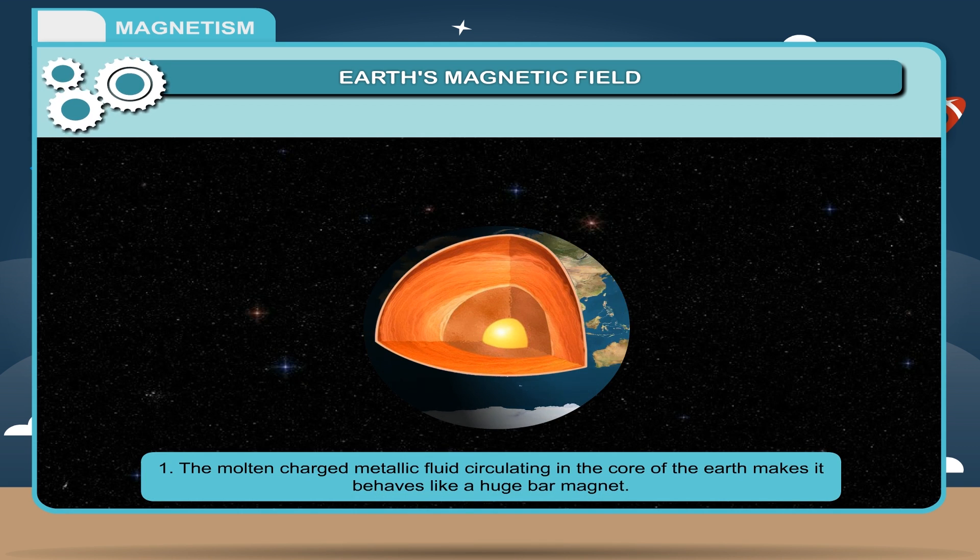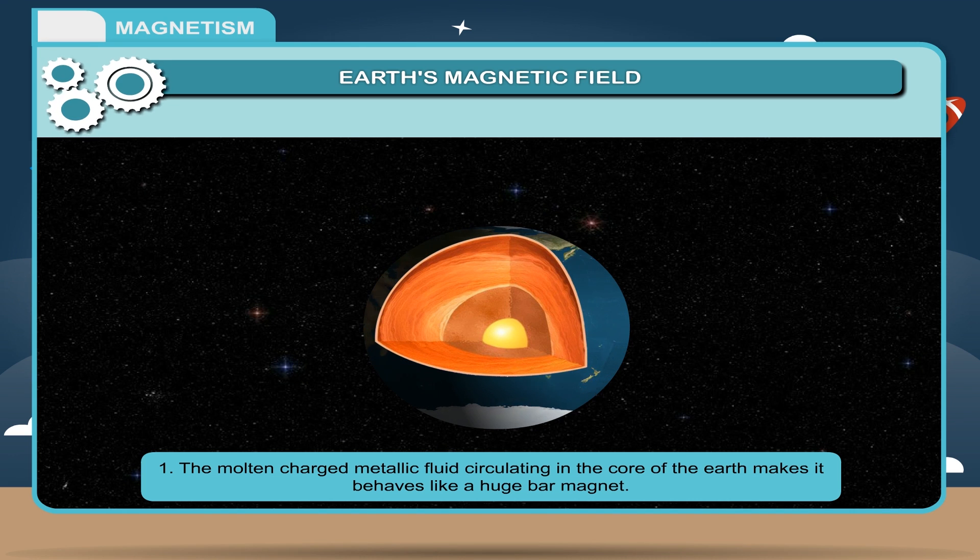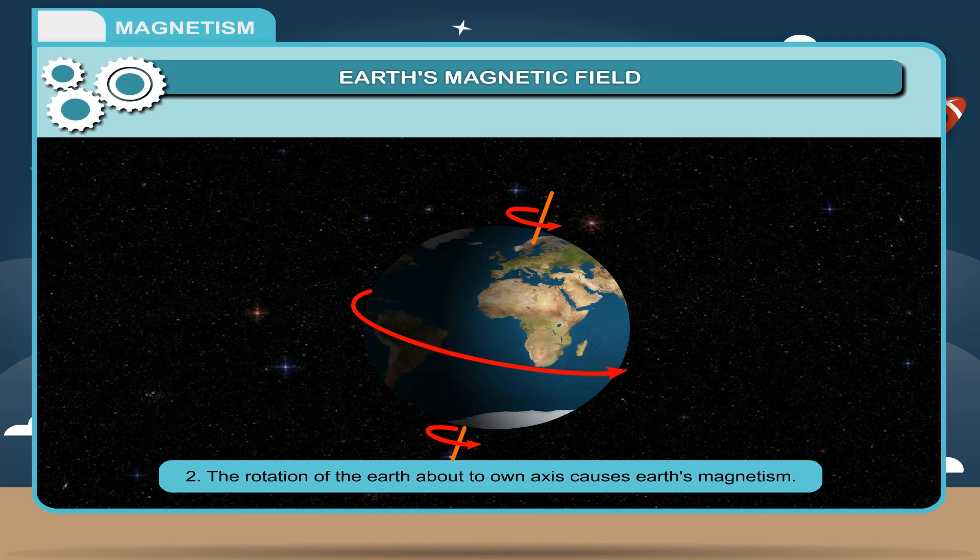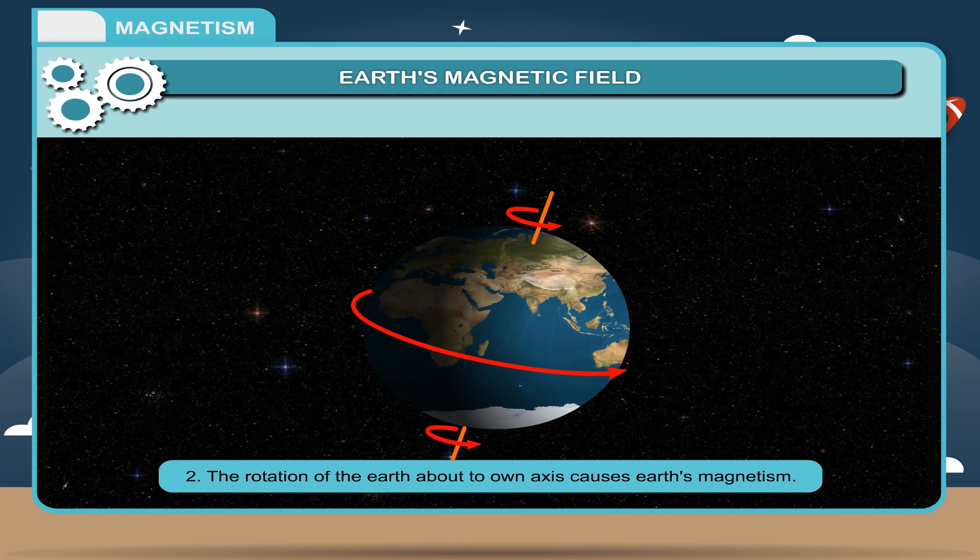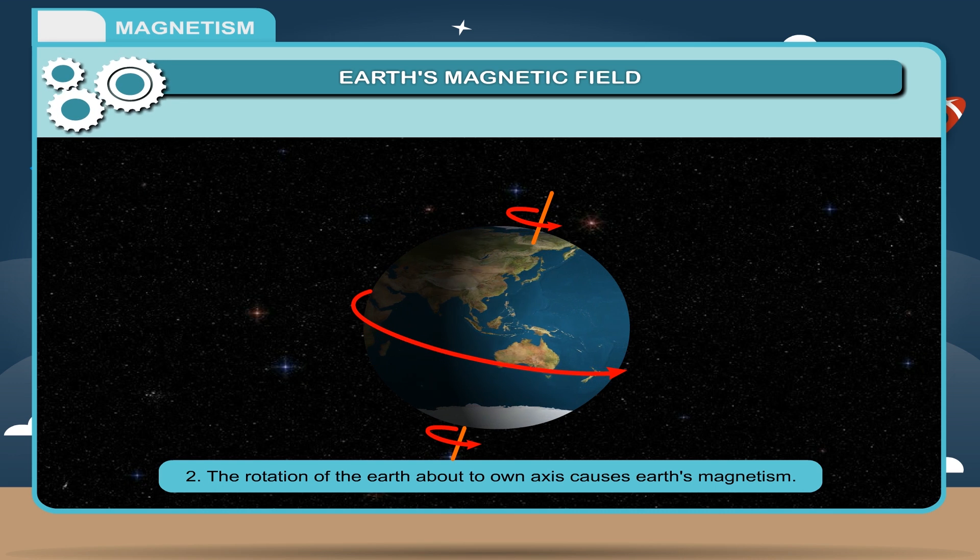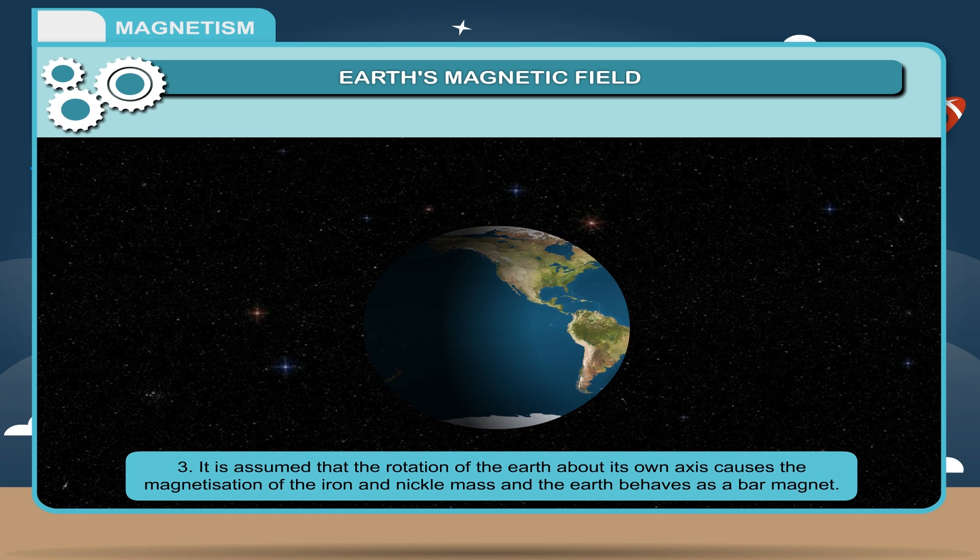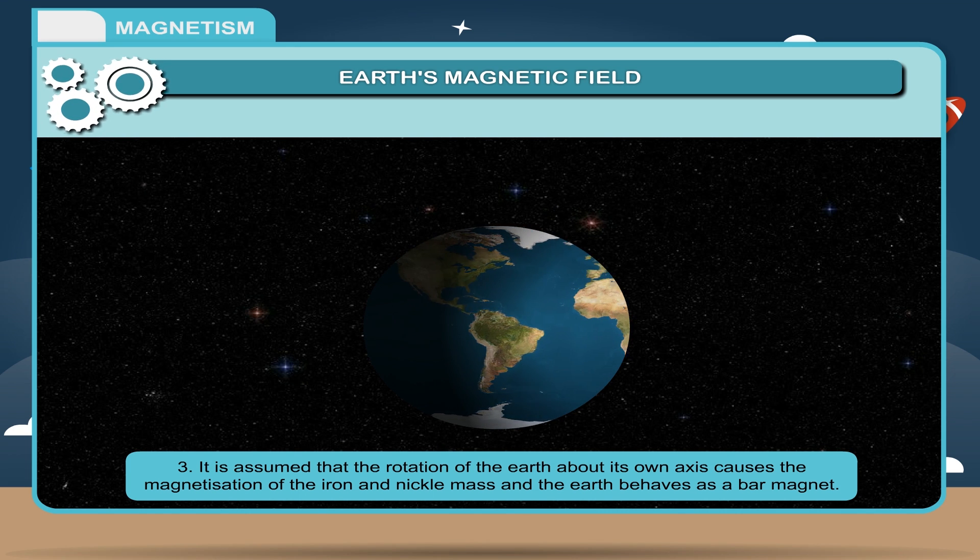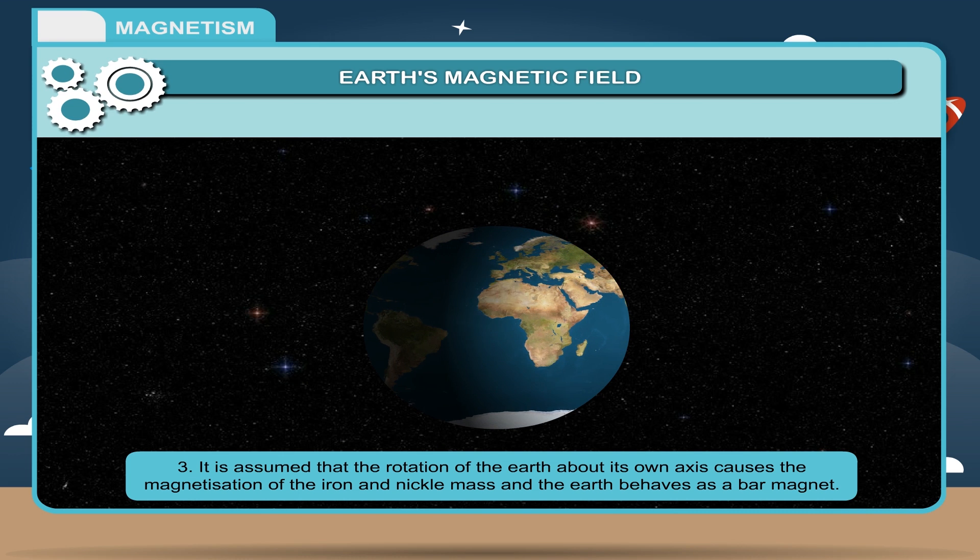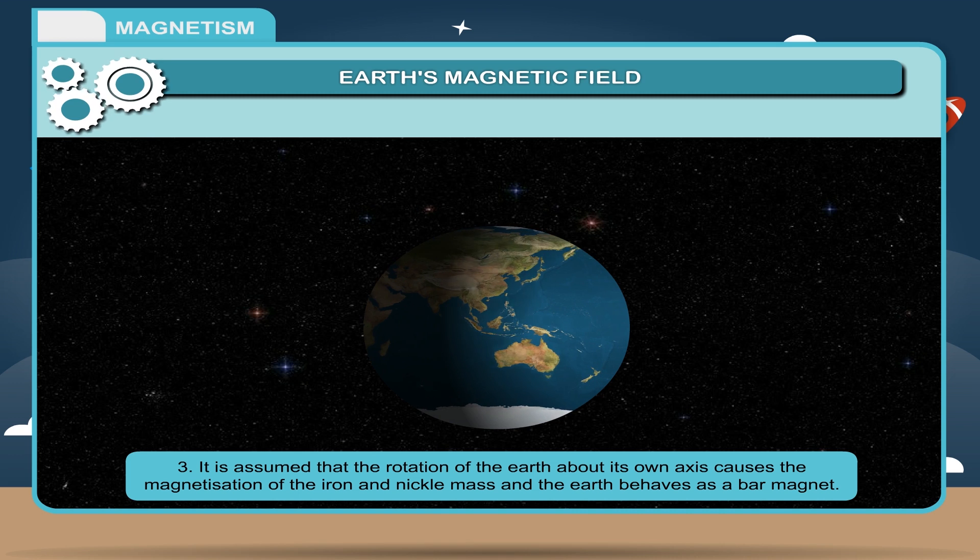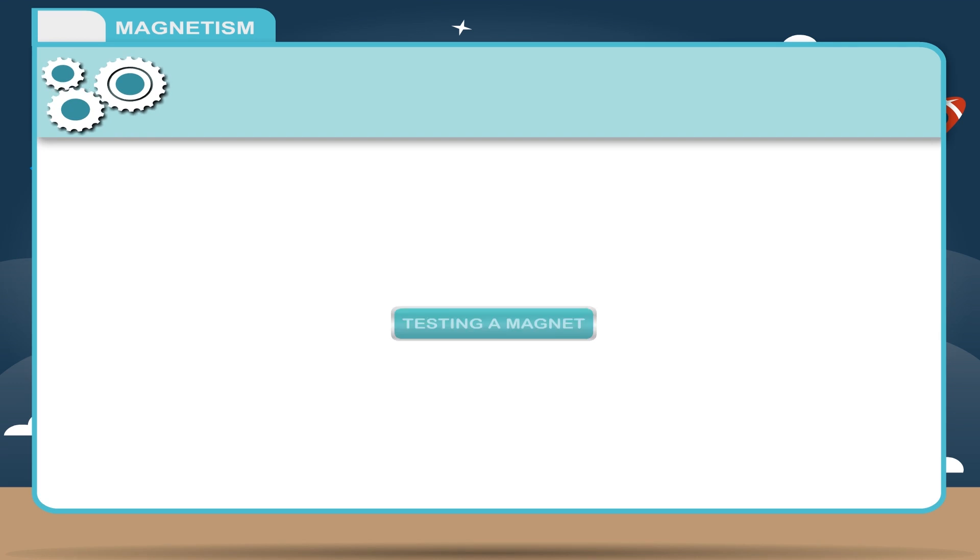1. The molten charged metallic fluid circulating in the core of the earth makes it behave like a huge bar magnet. 2. The rotation of the earth about its own axis causes earth's magnetism. 3. It is assumed that the rotation of the earth about its own axis causes the magnetization of the iron and nickel mass and the earth behaves as a bar magnet.